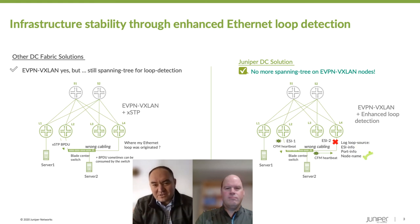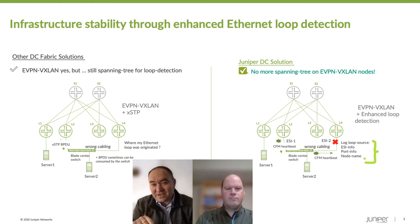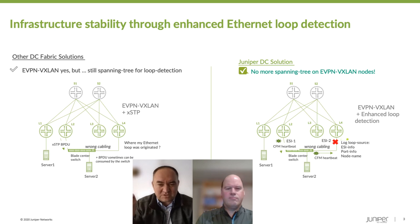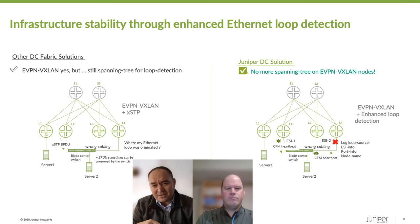So these additional capabilities will serve the proximity team to identify, in case of a problem, where the source of the loop really happened. Someone can just log on the box and check which ESI actually originated that heartbeat. On the example we are showing here, we have just two leaves. Someone wrongly connected both of these leaves together, and each port on this leaf was enabled with a different ESI, and it just created an Ethernet loop. So with the Enhanced Loop Detect using CFM, we not only block the port in order to kill the Ethernet loop, but we can also identify where this wrong connectivity really happened — on which node, on which port, and on which ESI from EVPN.